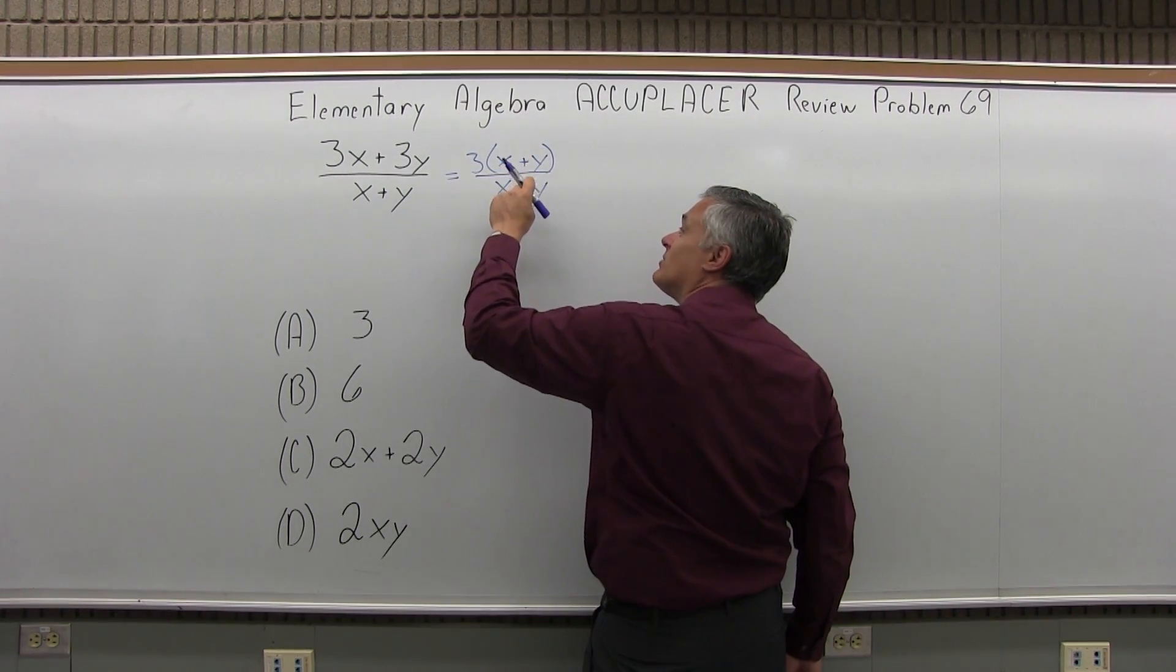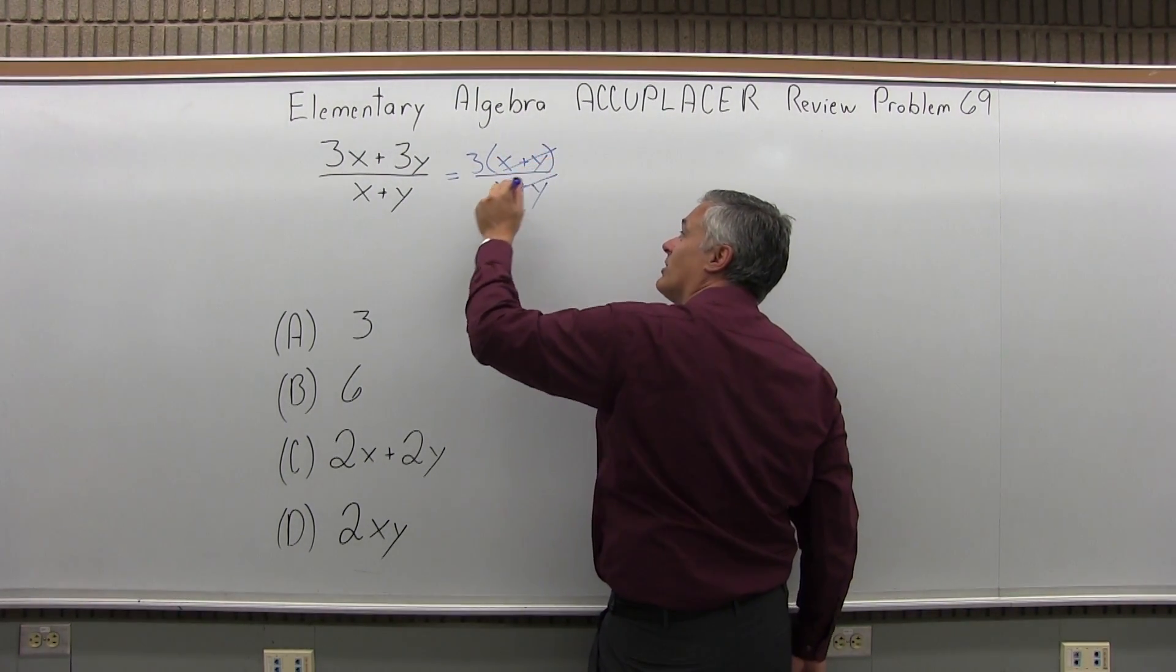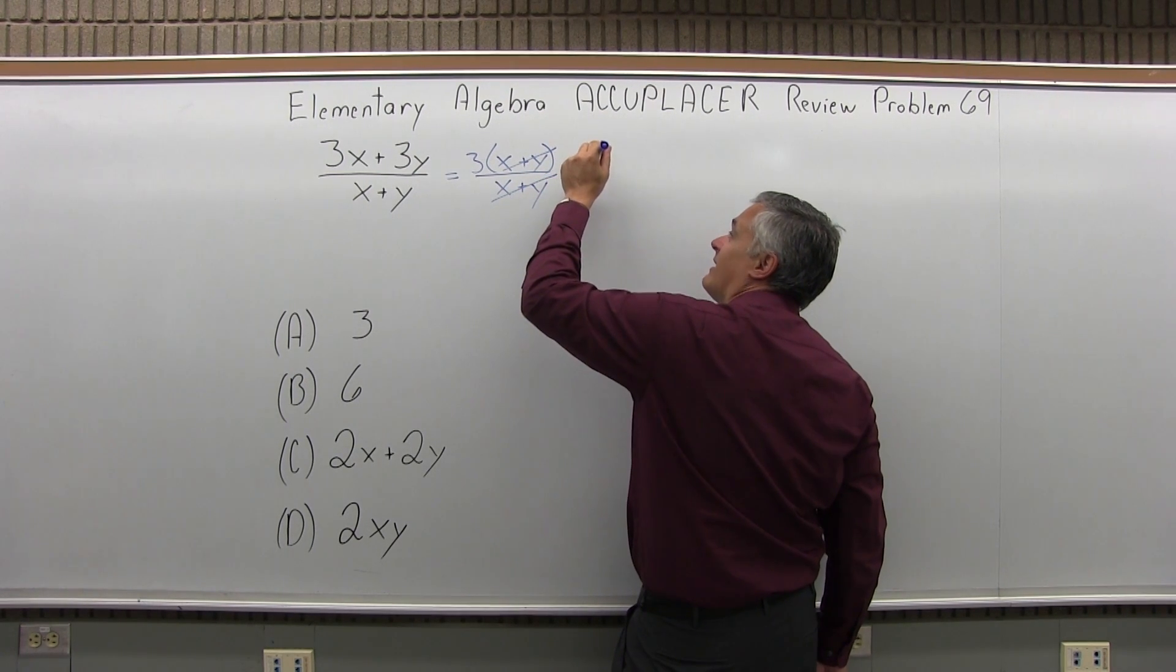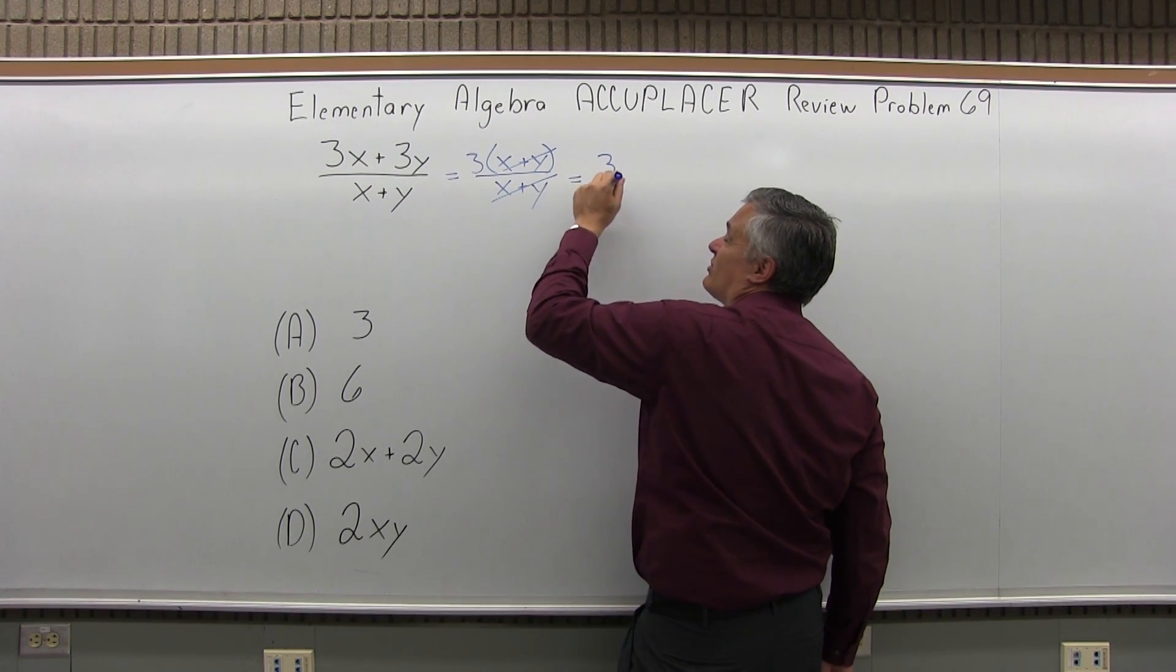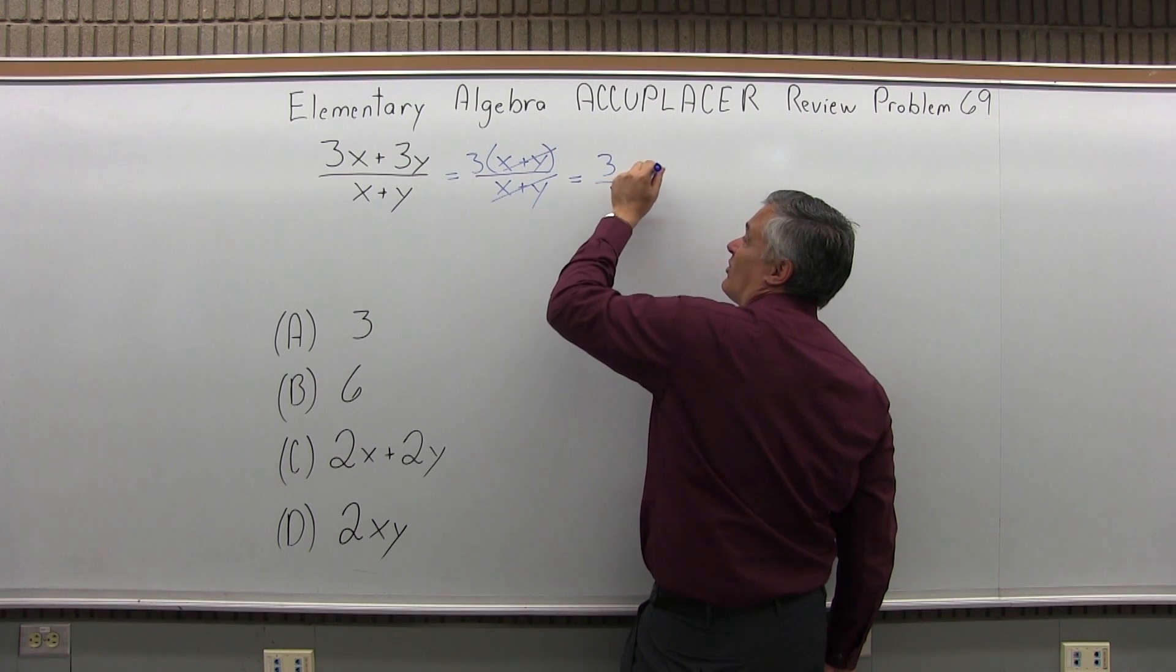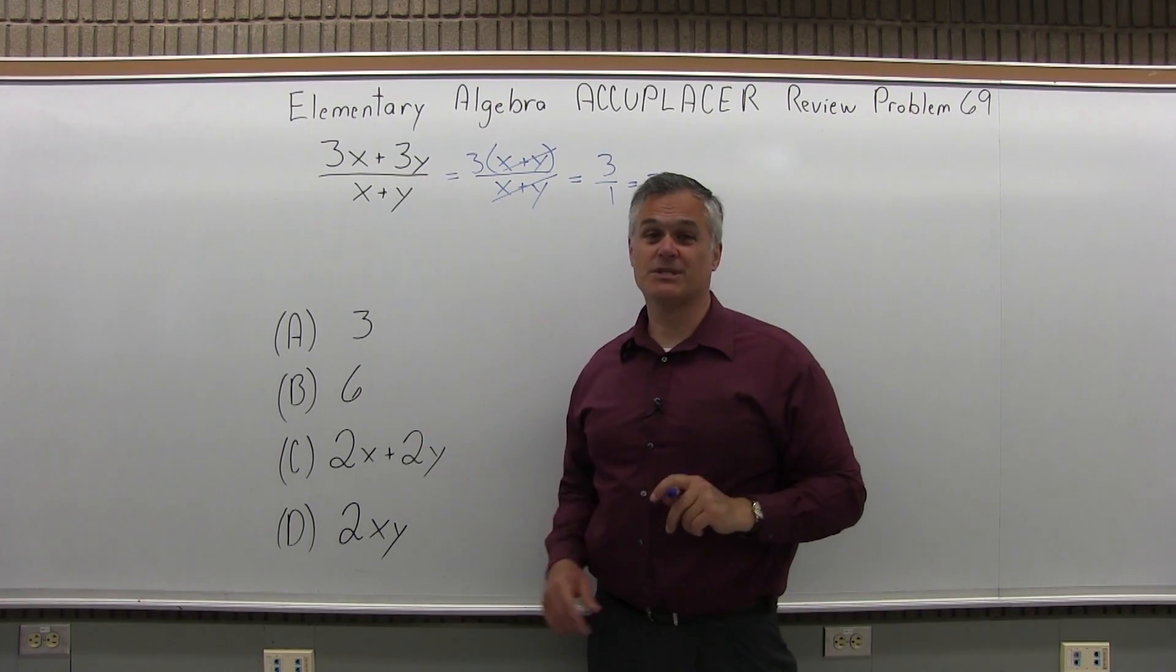And now, x plus y on the top, x plus y on the bottom will cancel, and what's left is just a 3. It's really 3 over 1, but you don't write the over 1. It's just 3, which is also one of the options.